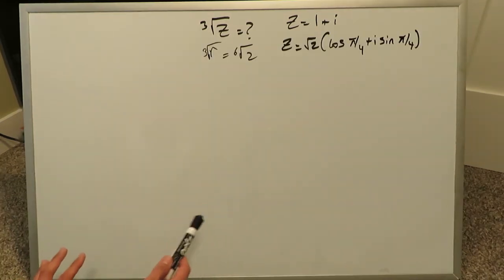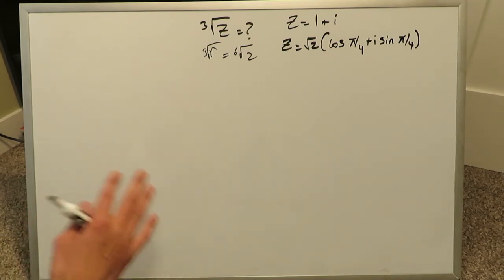Our eventual goal for this video is to graph the cube roots of that complex number 1 plus i. Up till now, we've converted that general form into that polar trigonometric form, and we've also computed the cube root of that modulus. Now what we have to do is apply de Moivre's theorem formula for the calculation of these cube roots.